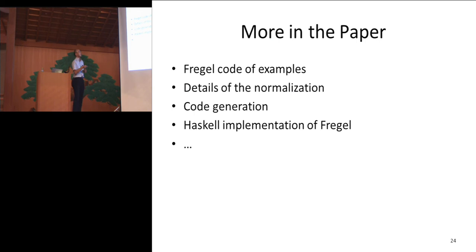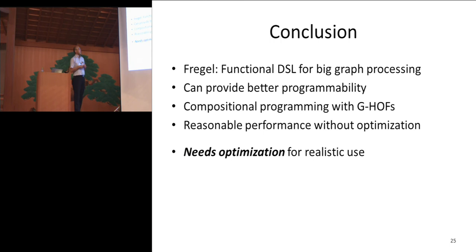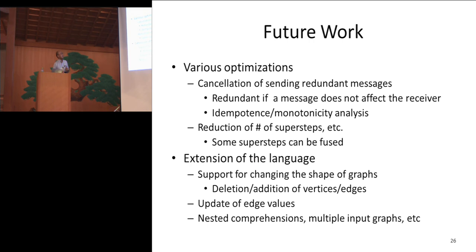If you are interested in these examples, you can refer to the paper. Details of normalization and code generation are also discussed in the paper. In conclusion, we have developed a functional DSL for big graph processing — Fregel. It provides better programmability and supports compositional programming with graph higher-order functions. It achieves reasonable performance without optimization, but we think that optimization is needed for realistic use of Fregel. Future work includes various optimizations to reduce redundancy, and extending the language to support changing the shape of graphs, updating edges, and so on.